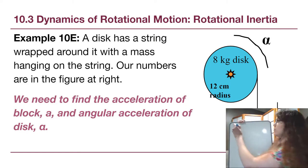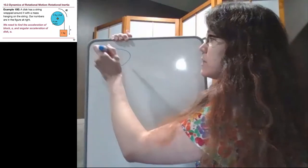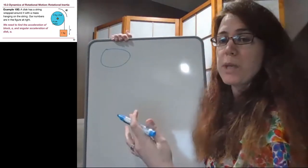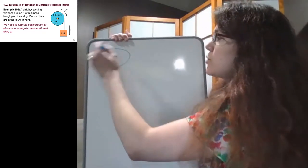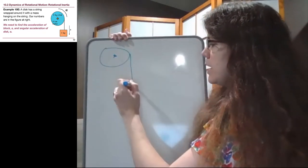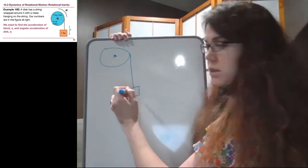Okay, so what we have is a disk that is attached to the wall. It will not be able to move, it is attached to the wall, and it has a string around it that has a mass at the very end.